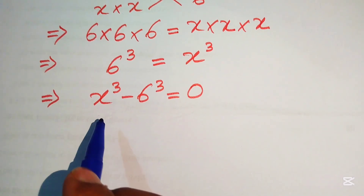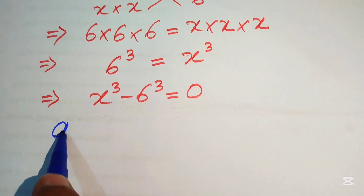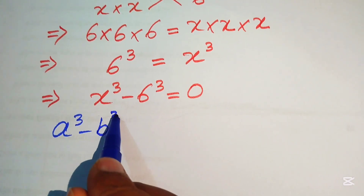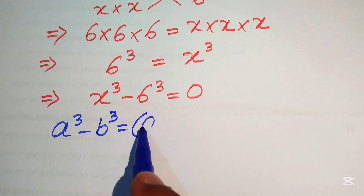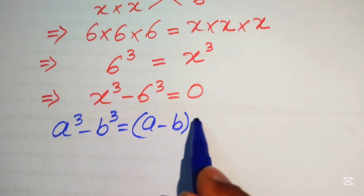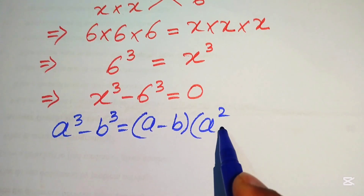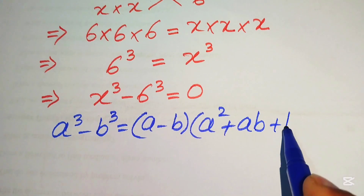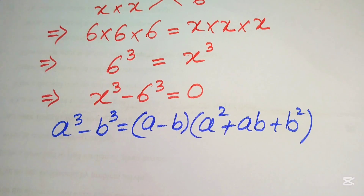To solve further, we use the cubic formula: a³ minus b³ equals (a minus b)(a² plus ab plus b²). We use this formula to solve the cubic equation.